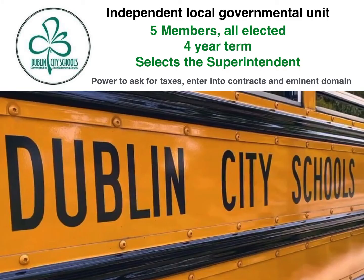One other independent local government unit to discuss is the school board. Under Ohio law, a school board is an independent local government unit that operates separately from the city or the county. In Dublin, there are five members on the school board, all elected at staggered times — three one cycle, then two a couple of years later — each serving a four-year term. This group makes the rules for the school district: when school starts and ends, the calendar, what you learn. The school board then hires a superintendent to be basically the mayor of the school district, ensuring the rules passed by the school board are enforced.